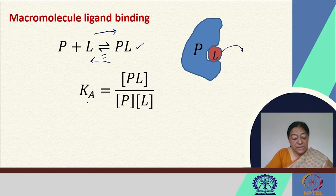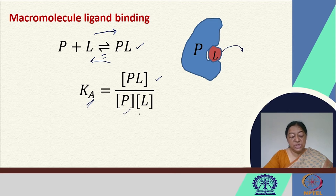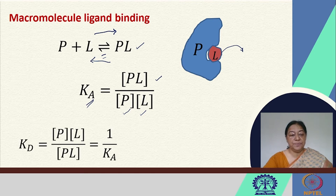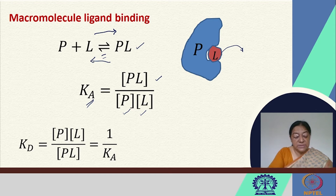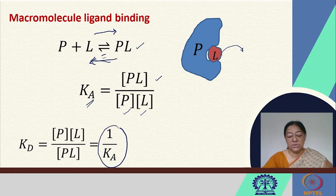When we look at the association constant Ka, we have the protein-ligand concentration as the numerator, and the product of the protein concentration and ligand concentration as the denominator. When we consider the dissociation constant, since it is the reverse of this reaction, we realize it is the inverse of the association constant.